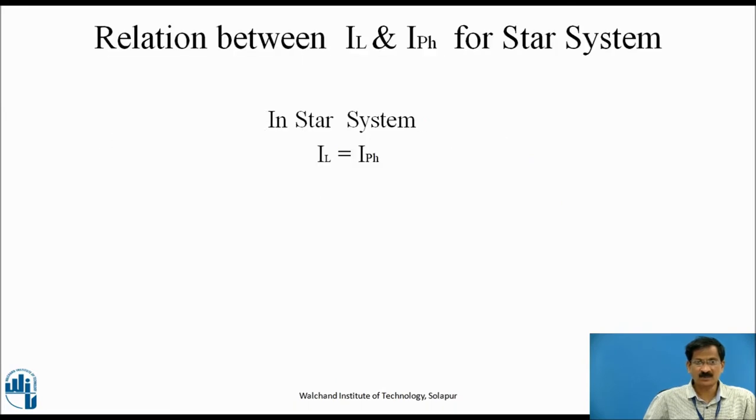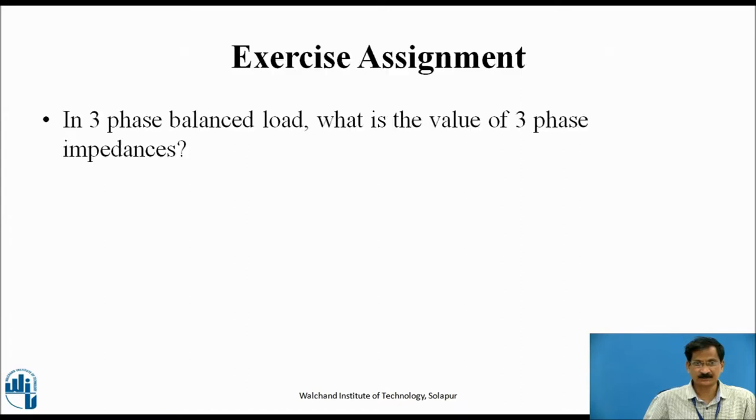Relation between line and phase currents for star system. For star system, line current is equal to the phase current. Exercise: In three-phase balanced load, what is the value of three-phase impedances?